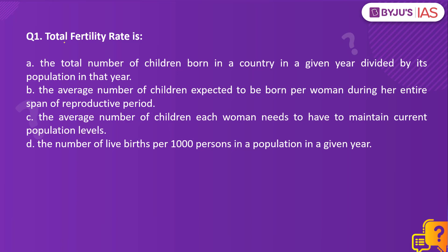Question number one: Total fertility rate is — Option A, the total number of children born in a country in a given year divided by its population in that year. Option B, the average number of children expected to be born per woman during her entire span of reproductive period. Option C, the average number of children each woman needs to have to maintain current population levels. Option D, the number of live births per thousand persons in a population in a given year.